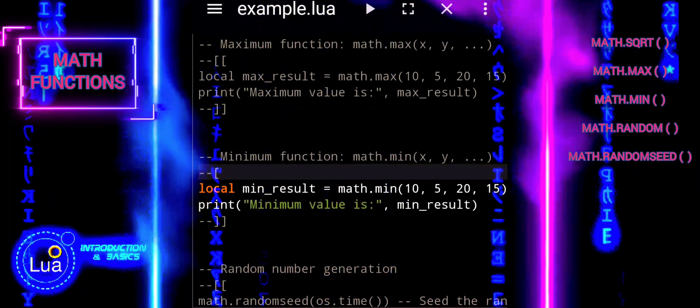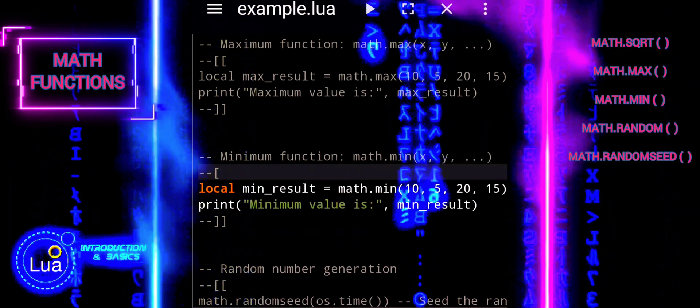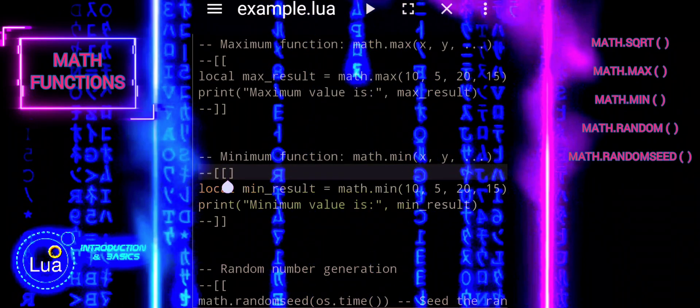In summary, math.min is a fundamental math function in Lua that efficiently identifies the minimum value from a given set of numbers, making it essential for comparisons and decision-making in programming.